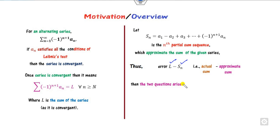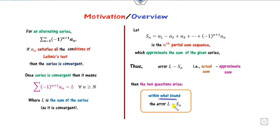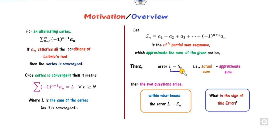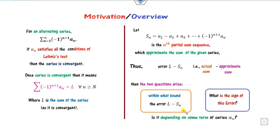Now two questions arise. First: within what bound does this error lie? Second: what is the nature of this error — that is, whether it is greater than 0 or less than 0, meaning whether the actual sum is greater than or less than the approximate sum. So is it dependent upon the series a_n whether the bound and the sign of the error are determined? That is the real motivation and curiosity about this concept.